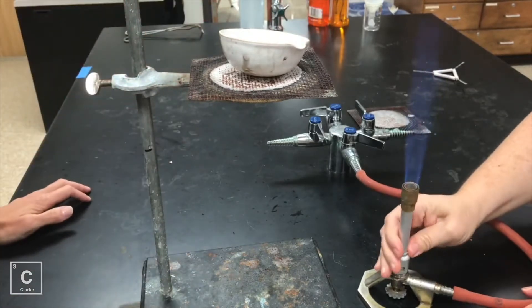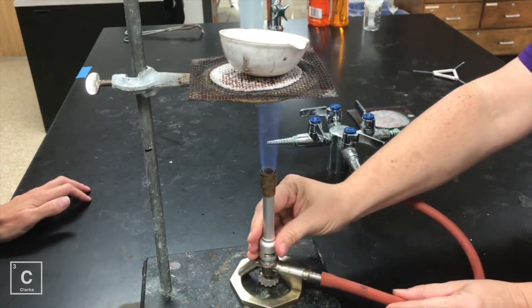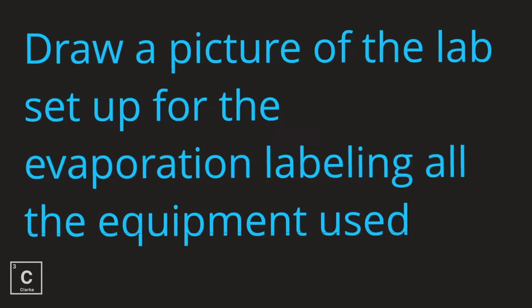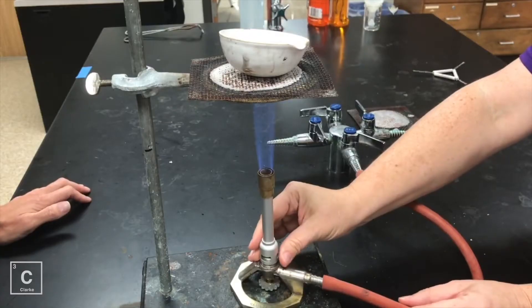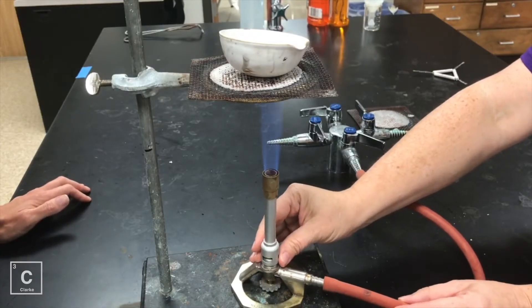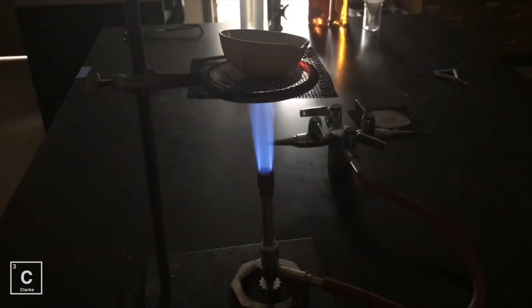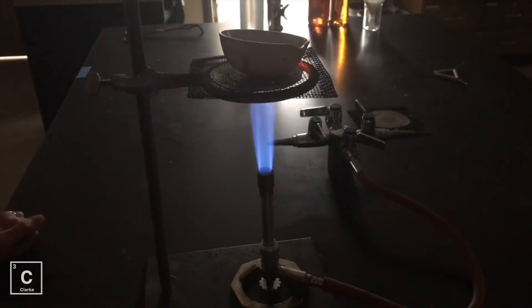And then we're going to use the Bunsen burner to evaporate the water. In your lab, I want you to draw a picture of the lab setup for the evaporation, labeling all the equipment that's used. Now remember, we've got to use that roaring blue flame. Not only do we want to use the roaring blue flame, we want the top of the inner cone to be close to the evaporating dish.